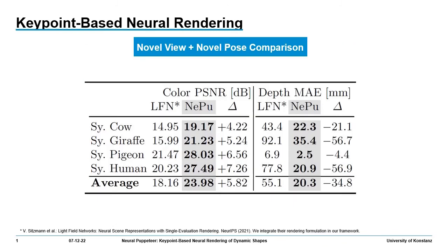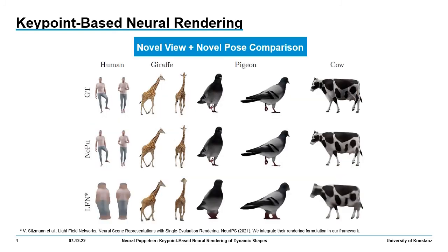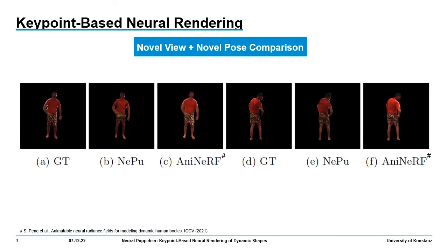Our inverse rendering for pose estimation works very well, and we achieve a better average mean per joint position error and median over all objects than learnable triangulation of human pose. Our qualitative results reflect the overall good quality of Nepu for pose estimation. Our forward differentiable rendering pipeline works very well too, and we achieve a better average peak signal-to-noise ratio and mean absolute error over all objects than light field networks. Our qualitative results reflect the overall good quality of Nepu for forward differentiable neural rendering.